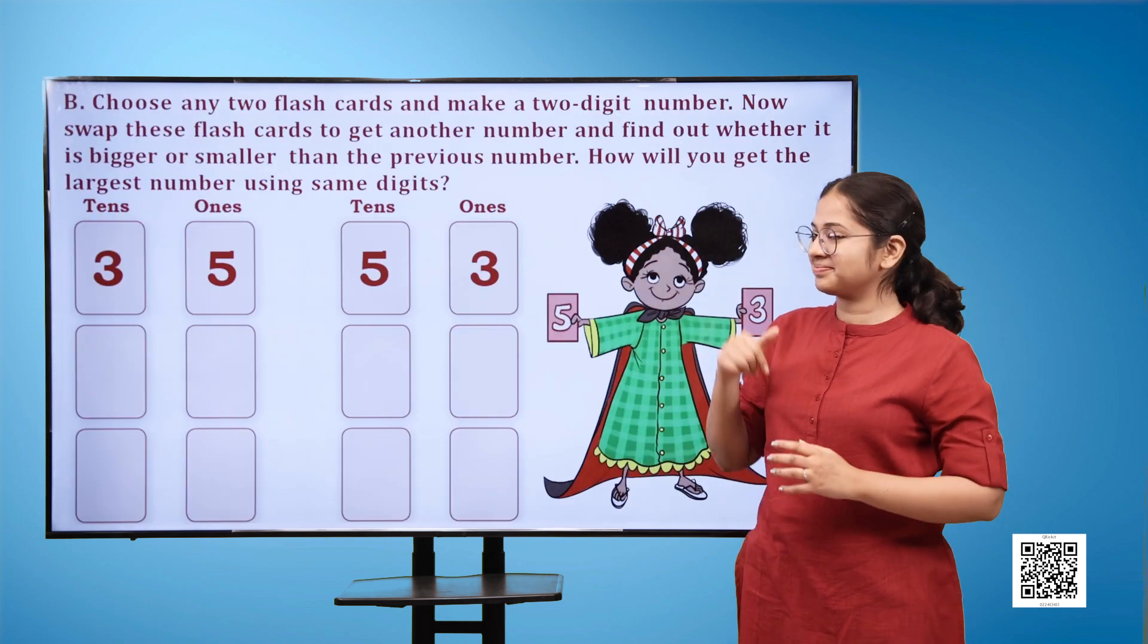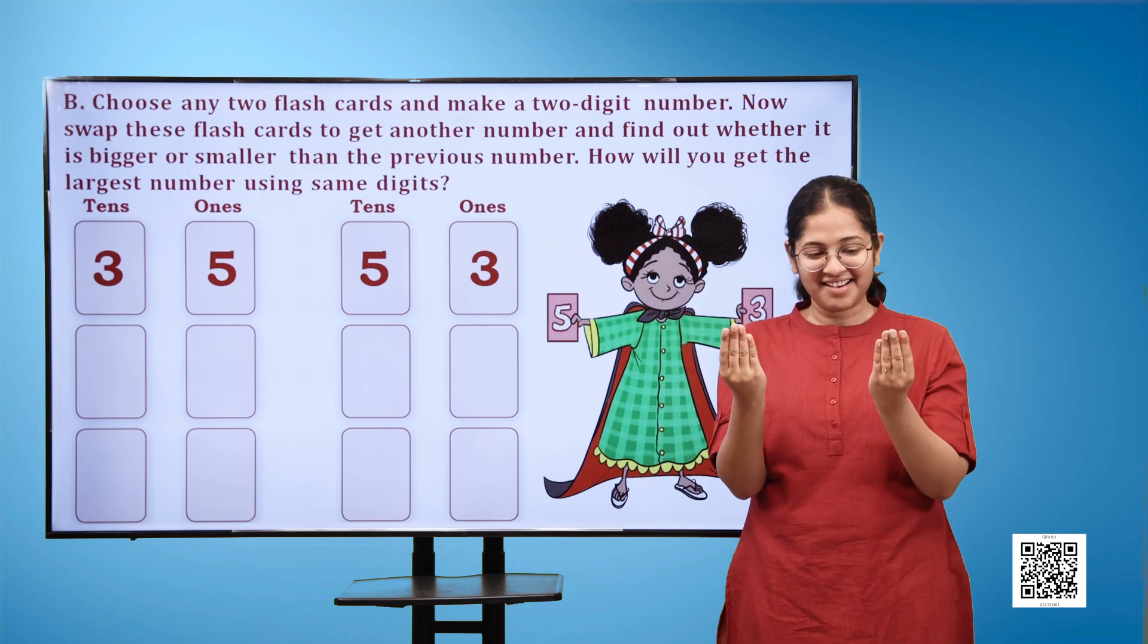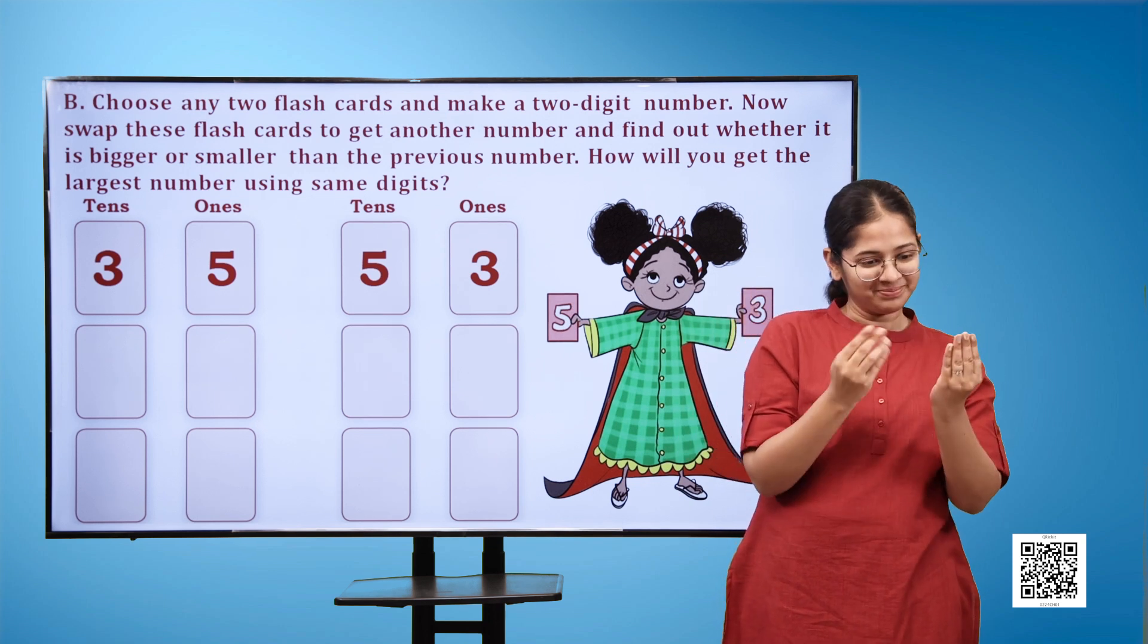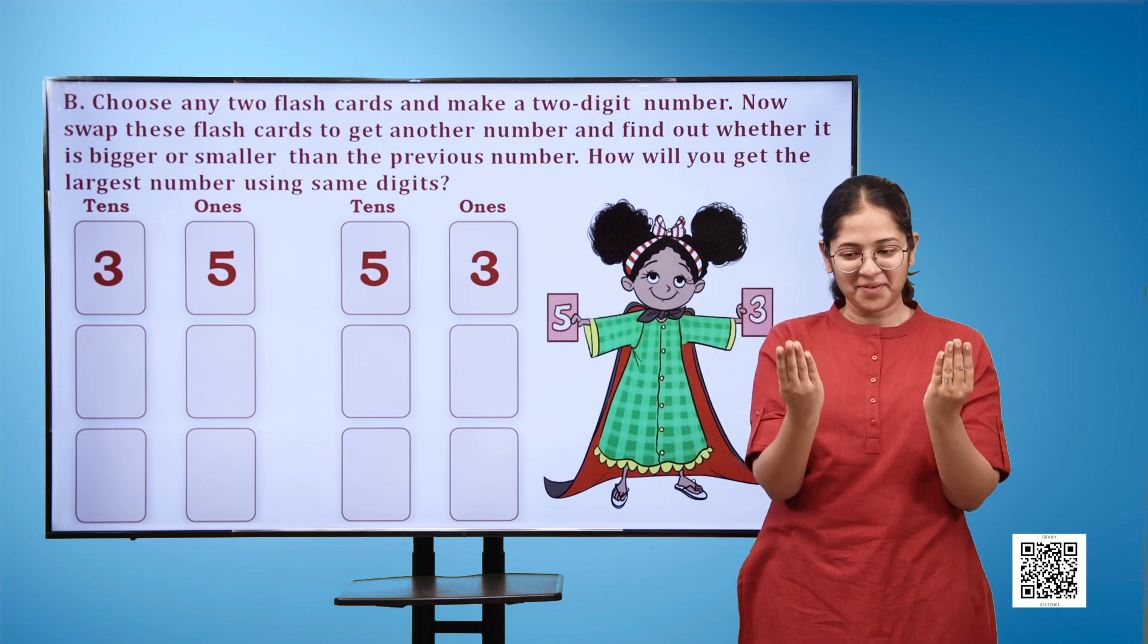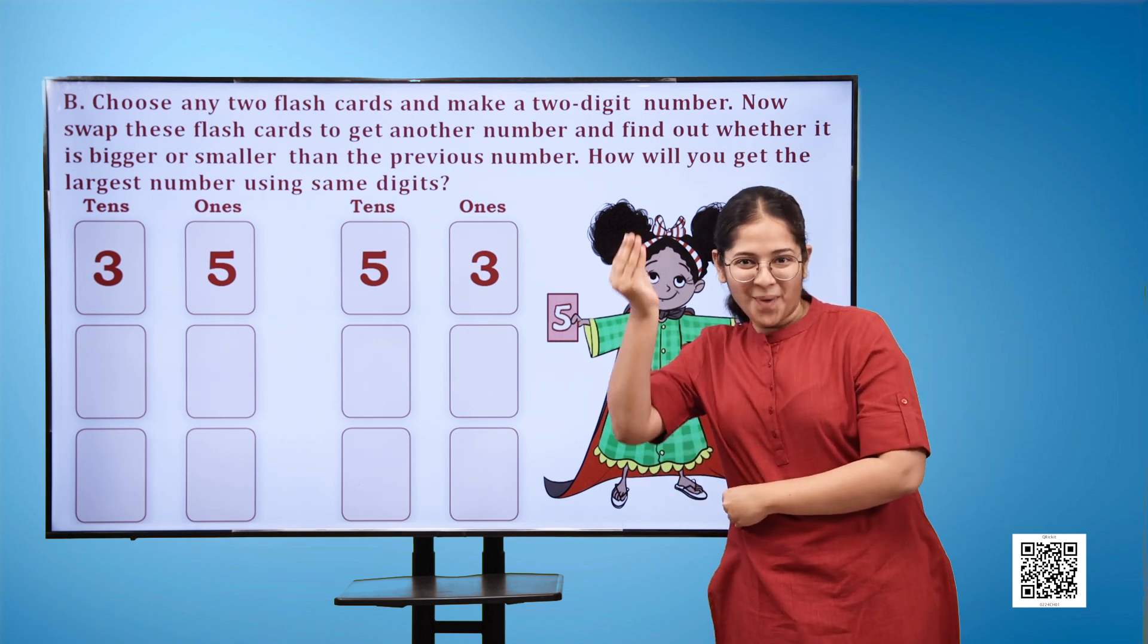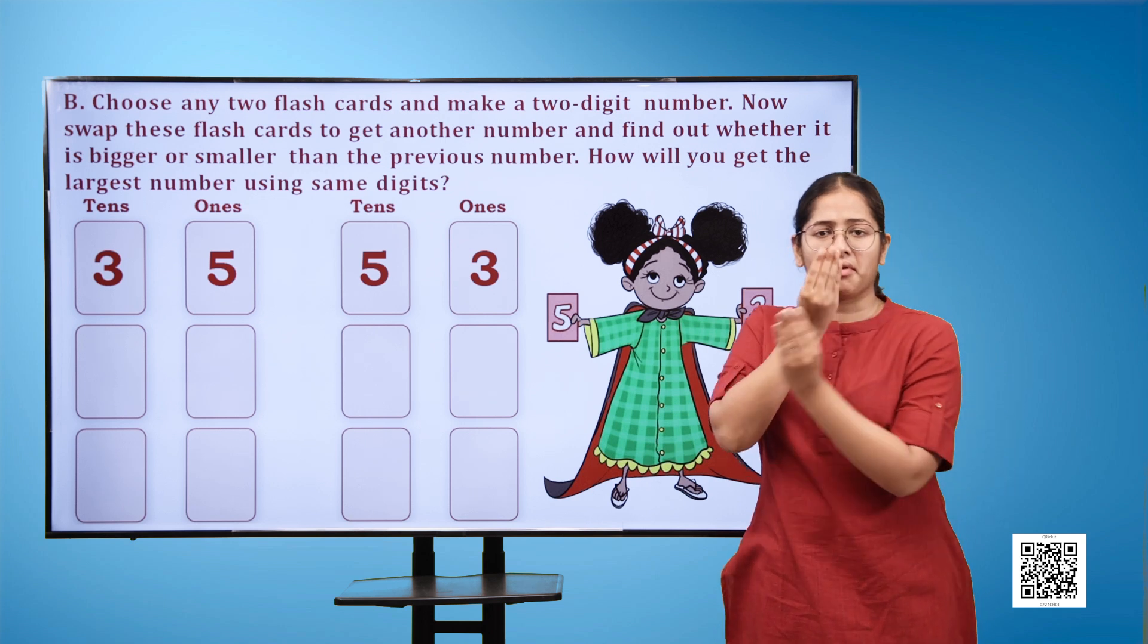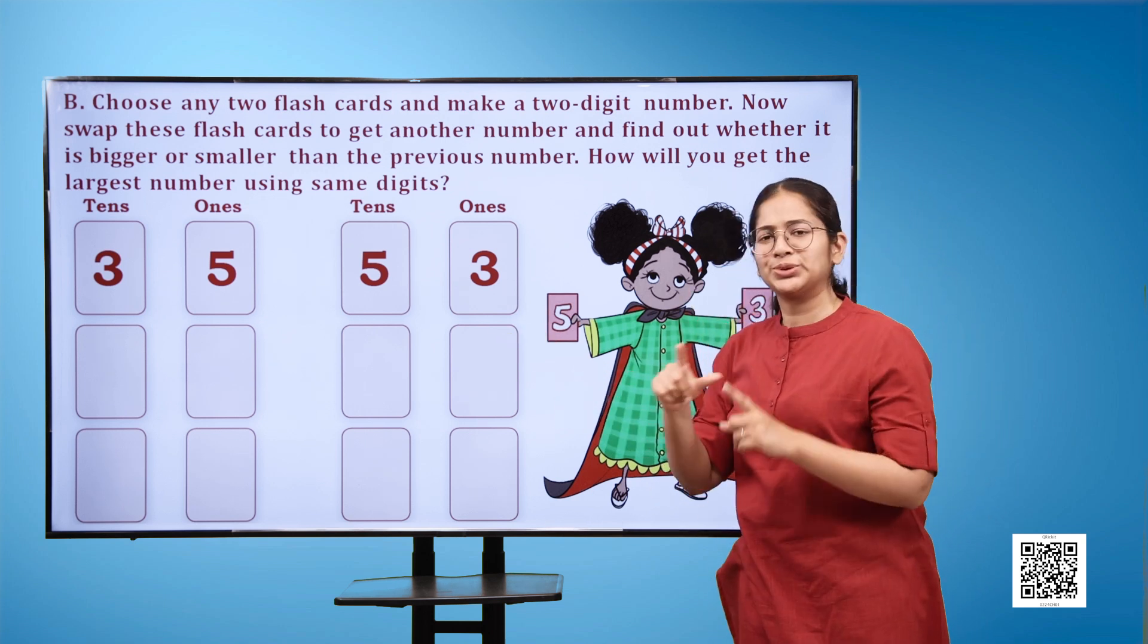B. Now we have an image here. In the image we can see a girl. In her left hand we can see number three placard. In the right hand, a number five placard. Now the numbers have been swapped. In tens we have five and in one's position we have three. Now swap these flashcards to get another number and find out whether it is bigger or smaller than the previous number.